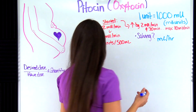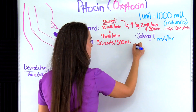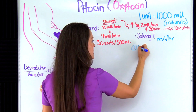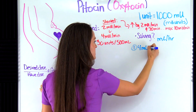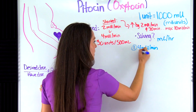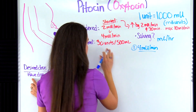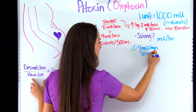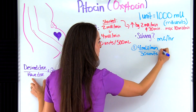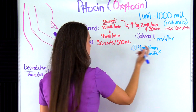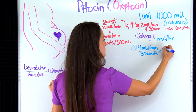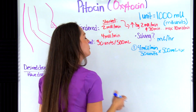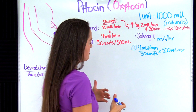Let's plug into our formula. First step — the desired dose: it's desired for the patient to receive four milliunits per minute. Over the halve dose — what you have — you have a bag with 30 units in it. Multiply that by the quantity: 500 milliliters, and this equals x. Let's check the units.